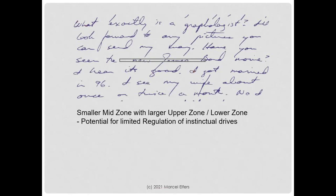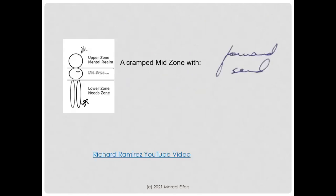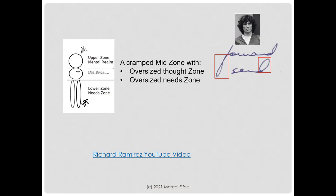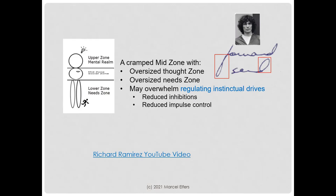No handwriting characteristic by itself is meaningful. Every handwriting characteristic needs to be collaborated with other handwriting characteristics. So a cramped mid-zone with an oversized upper zone — our mental or thought zone — and an oversized needs zone, or lower zone, has the potential to overwhelm our regulation of instinctual drives, leading to potentially reduced inhibitions and reduced impulse control.